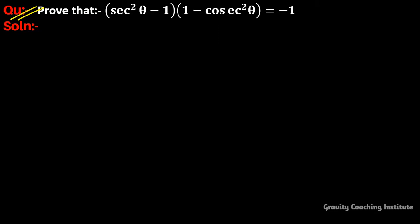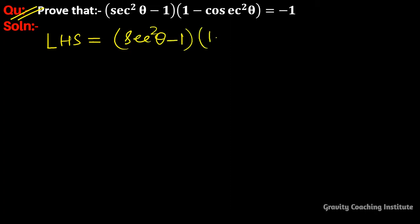Question: prove that (sec²θ - 1)(1 - cosec²θ) = -1. First, we write the LHS. LHS is equal to (sec²θ - 1)(1 - cosec²θ).